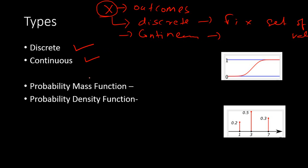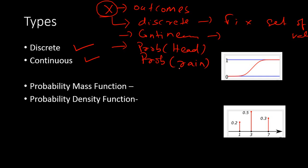For example, when you toss a coin, the probability of getting a head has outcomes of head or tail — a fixed set of values, so it's a discrete distribution. But for the probability that it is going to rain tomorrow, there is no fixed set of values; it could lie within a range, so we call it a continuous probability distribution.